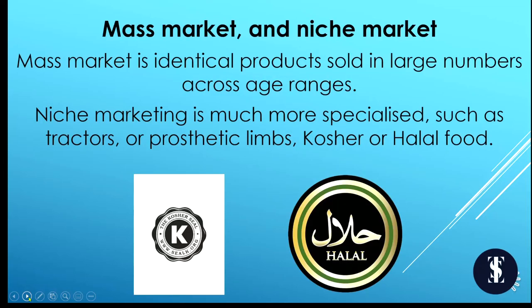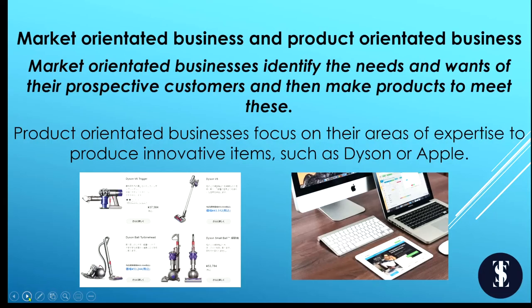Mass market: identical products sold in large numbers across all different age ranges. Niche marketing is much more specialised — such as selling a tractor, a prosthetic limb, or kosher or halal food. Market-orientated businesses identify the needs and wants of their customers and then make products to meet these. Product-orientated businesses focus on their areas of expertise to produce innovative items — think about Dyson or Apple.